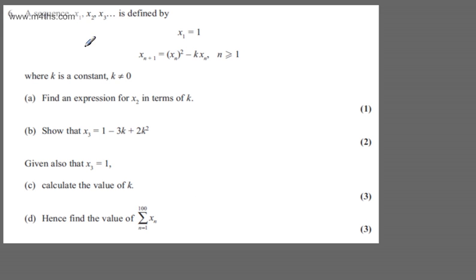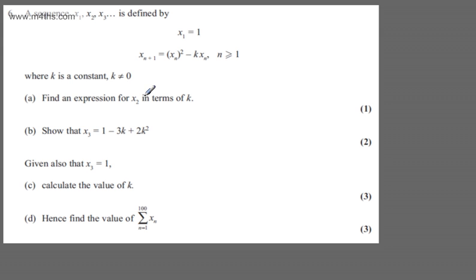This is question number 6. We're told a sequence x₁, x₂, x₃ and so on is defined by x₁ = 1, x_{n+1} = x_n² - k·x_n for n ≥ 1, where k is a constant and k ≠ 0. In part (a) we're asked to find an expression for x₂ in terms of k. The question carries one mark.